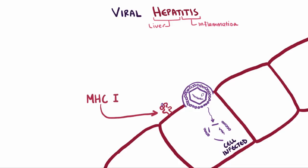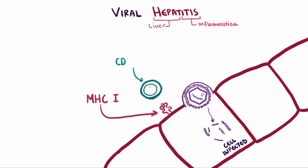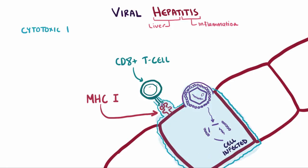At the same time, you've also got these immune cells infiltrating the liver and trying to figure out what's going on. The CD8-positive T cells recognize these abnormal proteins as a sign that the cells are pretty much toast, and the hepatocytes then go through cytotoxic killing by the T cells and apoptosis.